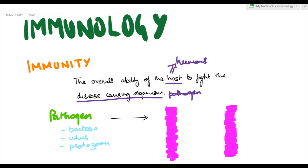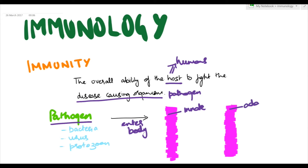The pathogen can be bacteria, virus, or protozoan. It tries to enter the human body, and when it does, it has to confront two types of immunity: the first is innate immunity, and the second is adaptive immunity.